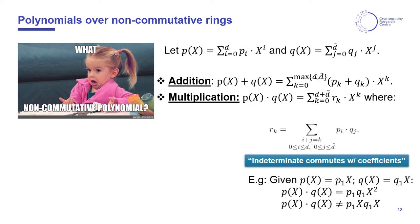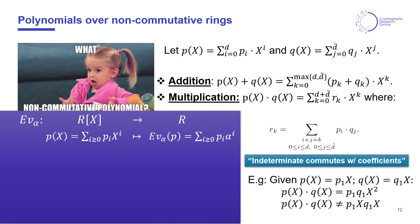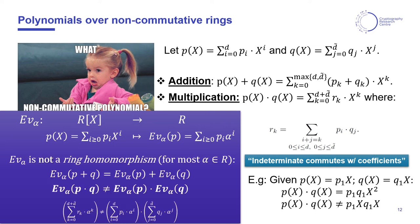In order to do this, we will artificially make the indeterminate commute with the coefficients of the polynomial. So, for example, p₁x times q₁x will result in p₁ times q₁ times x², rather than p₁ times x times q₁ times x. As a result, polynomial evaluation is no longer a ring homomorphism. In particular, we have broken the multiplicative group homomorphism for a general α.